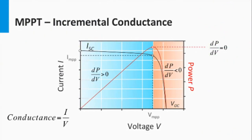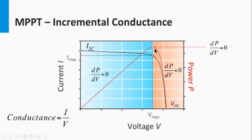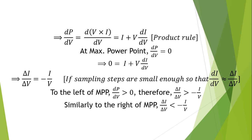Look at this curve. This is the IV characteristic curve, and it can be seen that when the rate of change is zero, this is the knee point at which we choose our operating point for maximum power efficiency. At this point, the rate of change of the power curve with respect to voltage equals zero.